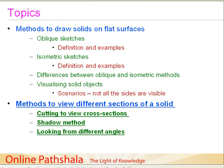Welcome back. In this session we are going to discuss the various methods we can use to view the different sections of a solid. A section is simply a portion you see when you cut a solid — a two-dimensional representation of just a part of it. There are three methods we will discuss: the cutting method to view cross-sections, the shadow method, and viewing from different angles.